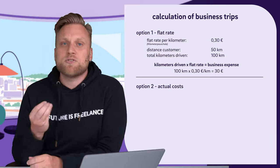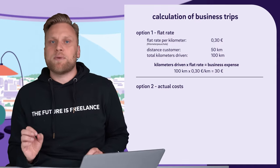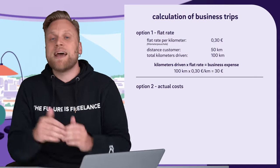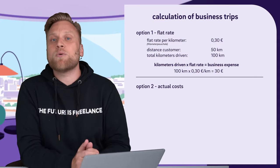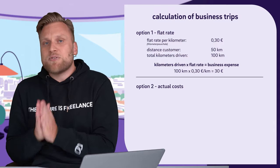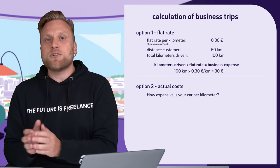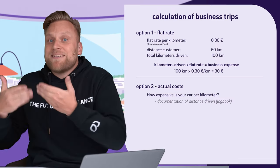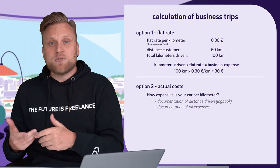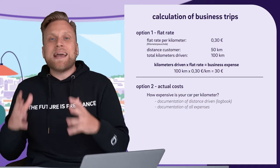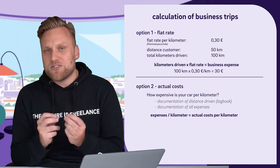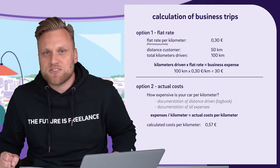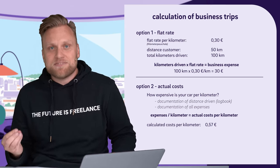Alternatively, instead of using the flat rate, you can also calculate the actual cost per kilometer. Honestly, most cars cost much more than just 30 cents per kilometer. If you want to include more costs in your accounting, you can do that too. However, you need to accurately determine how much your car costs per kilometer — for that, you need to document your kilometers precisely, keep a logbook, and record all expenses related to your car. You can then calculate the actual cost per kilometer, and if that's, for example, 57 cents, you can apply this 57 cents per kilometer.